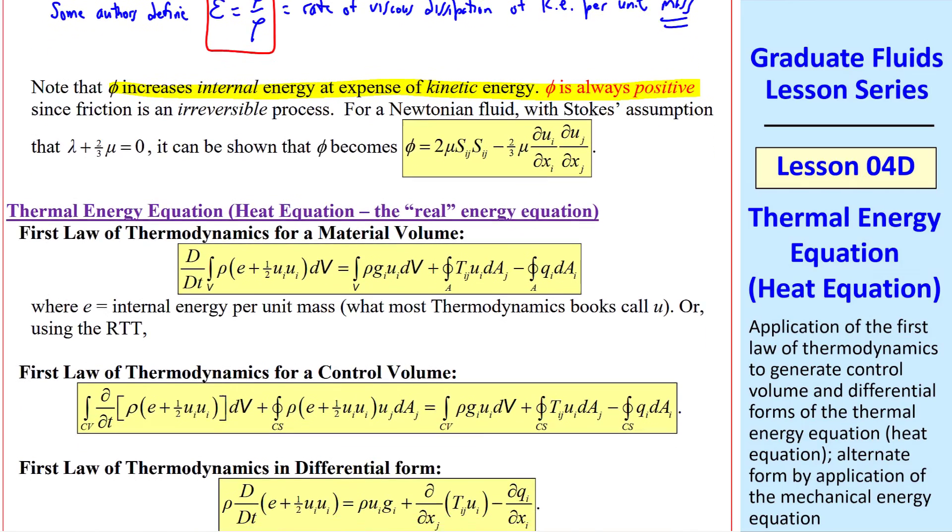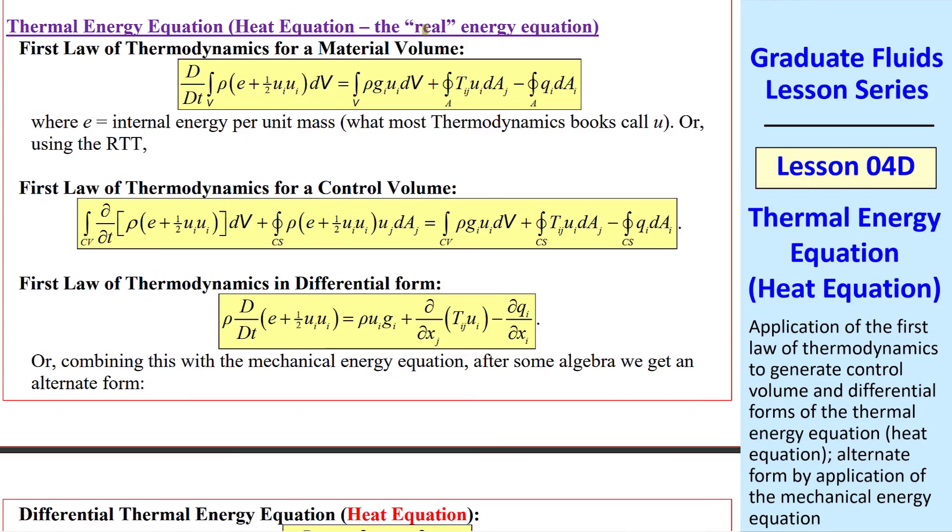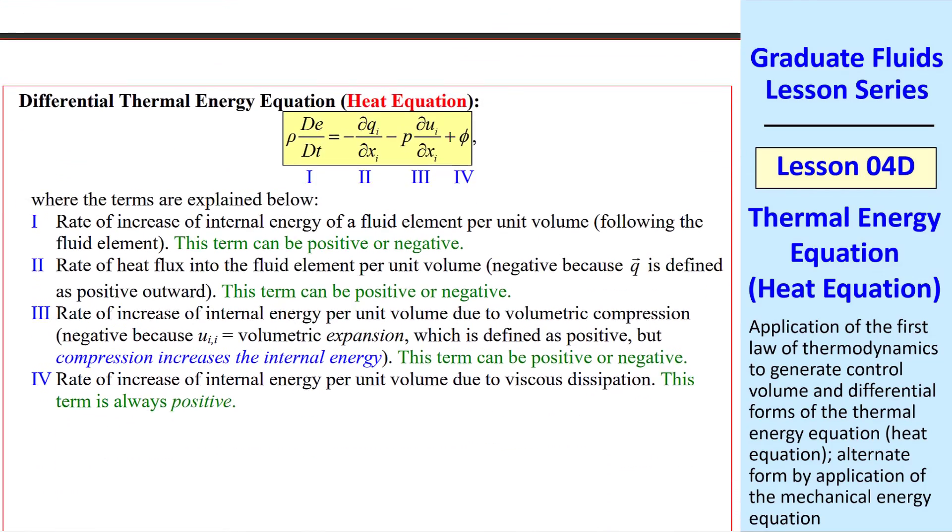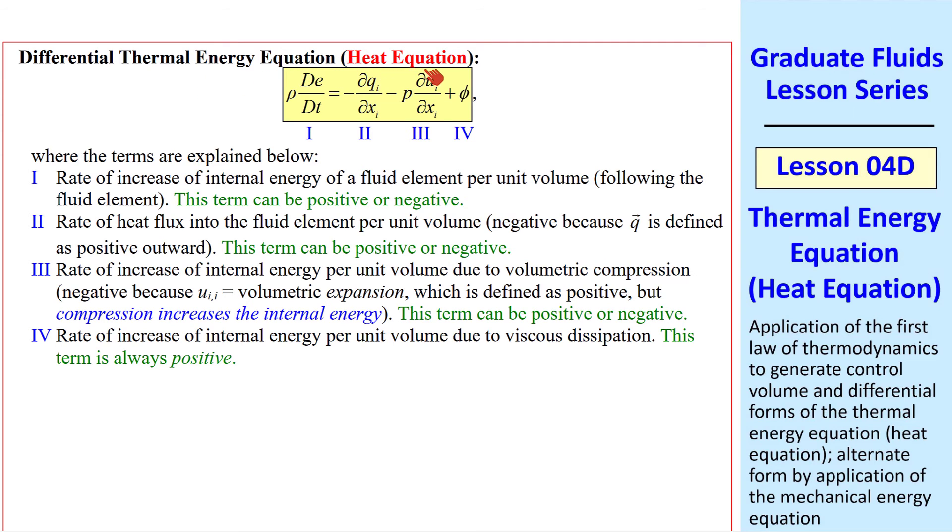In this lesson, we derived the thermal energy equation or the heat equation, which I like to call the real energy equation. I write it here for a material volume, which is the first law of thermodynamics for a chunk of fluid moving with the flow. And I remind you that the notation here is that E is just internal energy per unit mass or specific internal energy, which many thermobooks call U. If we use the Reynolds transport theorem, we transform this equation into a control volume form, which is written out here. And then we use Gauss's law to generate the differential form of the first law. Finally, I subtracted the mechanical energy equation from this equation to generate this alternate form of the thermal energy equation or the heat equation.